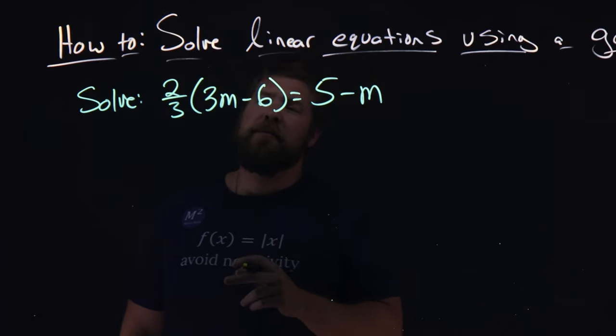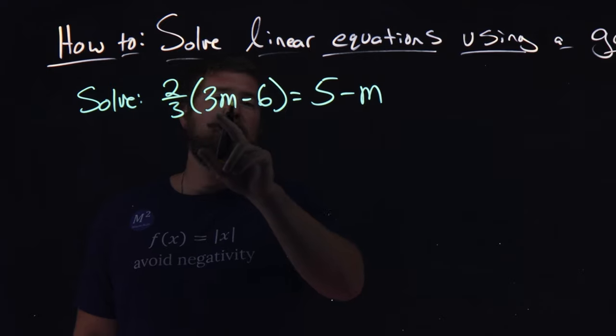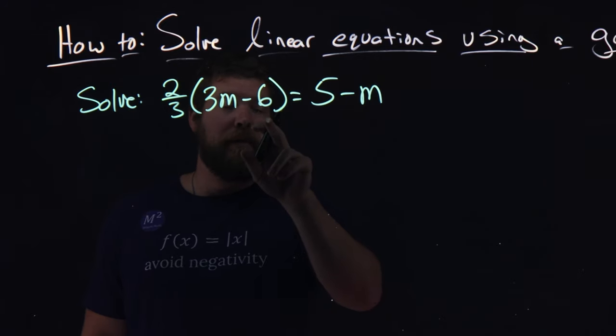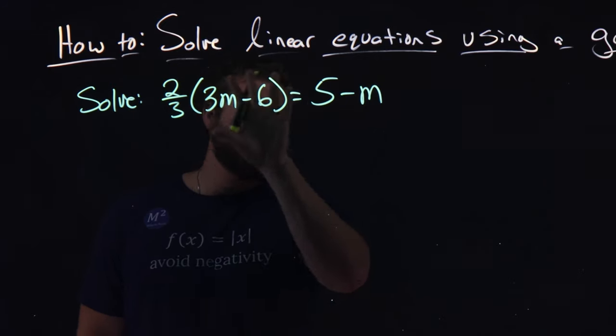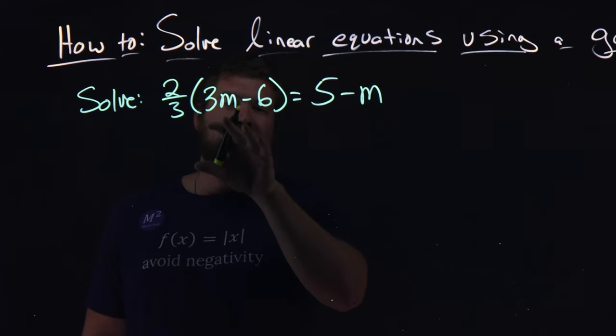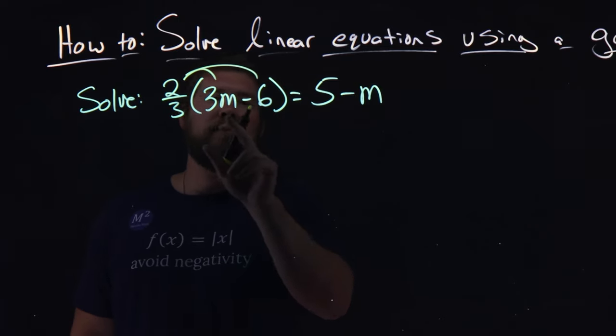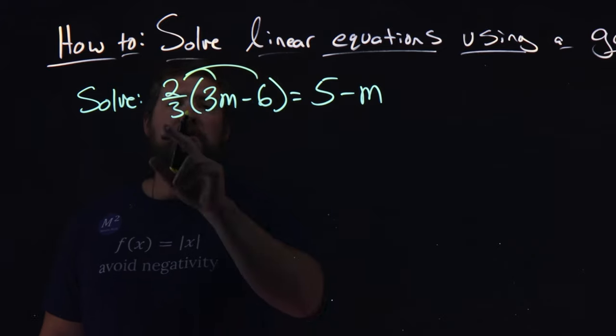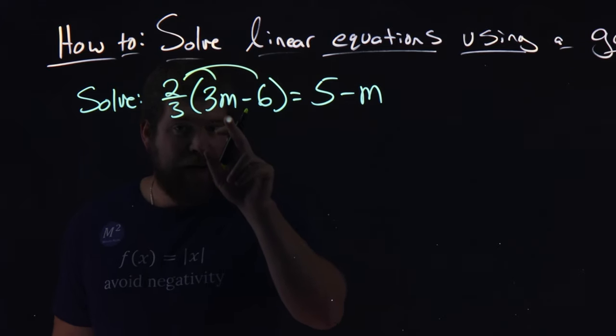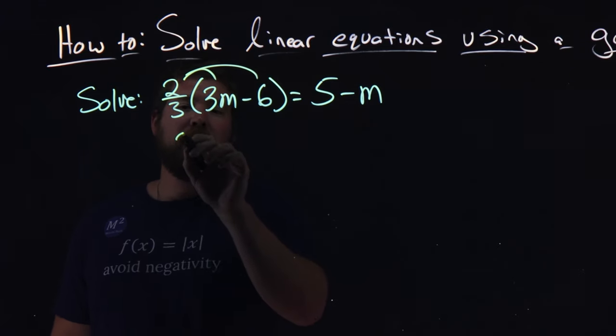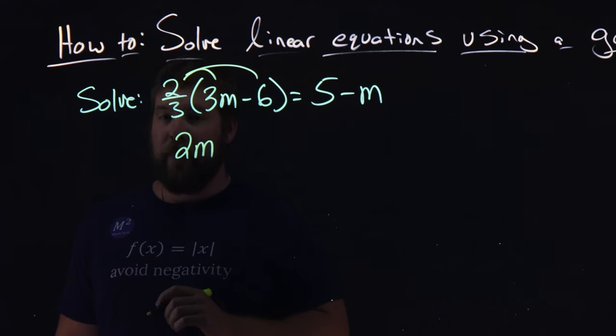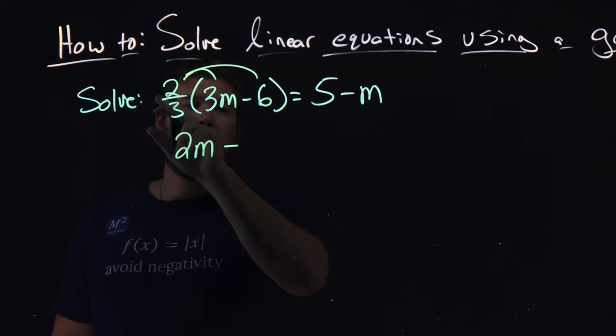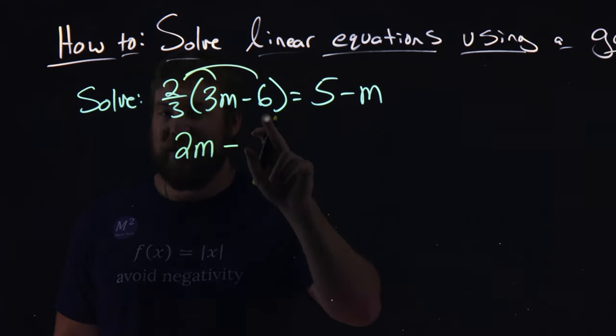So what I'm going to do first here is I'm going to distribute this 2 thirds into this parenthesis here. There's nothing that I see that I can simplify right away, so I'm going to multiply the 2 thirds to both parts. 2 thirds times 3m—the 3s cancel, and we're left with just 2m, minus 2 thirds times 6.